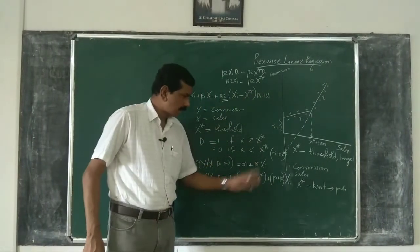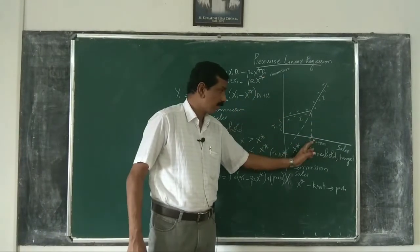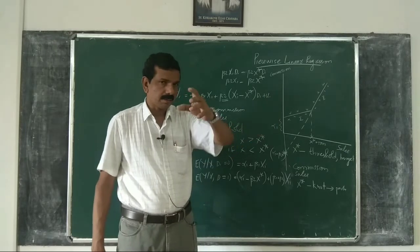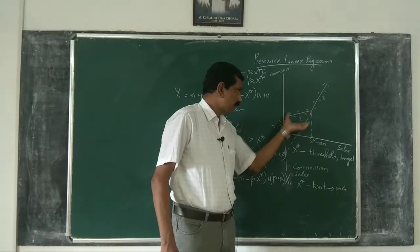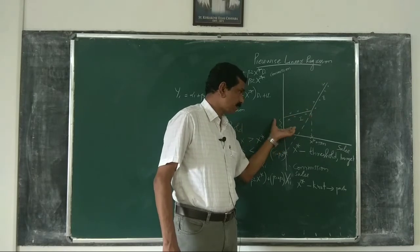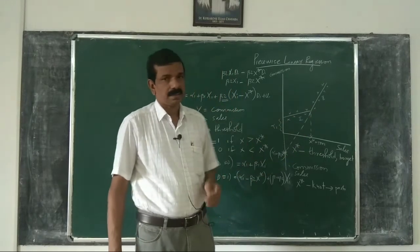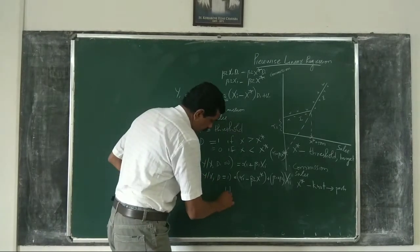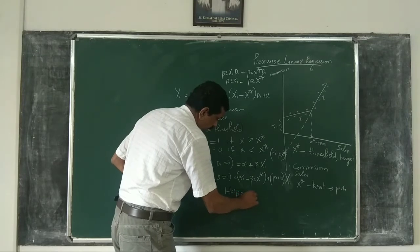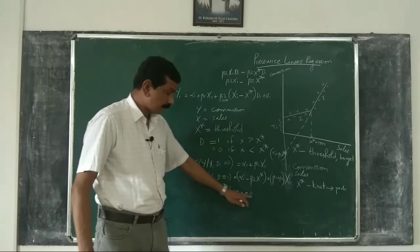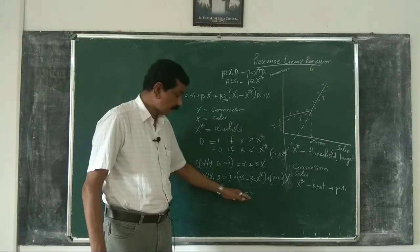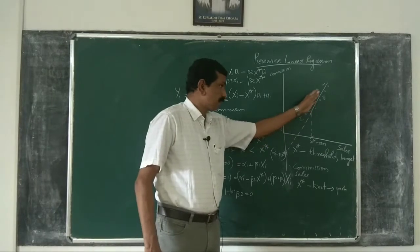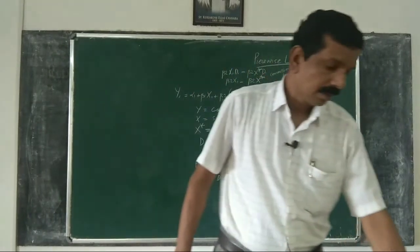To run this regression, you must know y, x, and also x*. For that, you plot the scatter plots and see whether there is a change in the slope after a certain level. We test the hypothesis H0: β2 = 0 versus H1: β2 ≠ 0. If β2 is not equal to 0, we say that this is a case of piecewise regression.